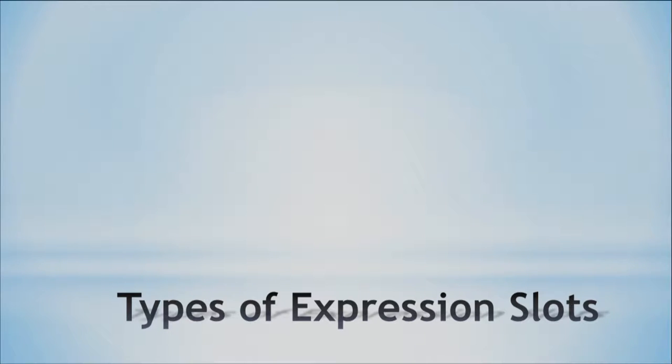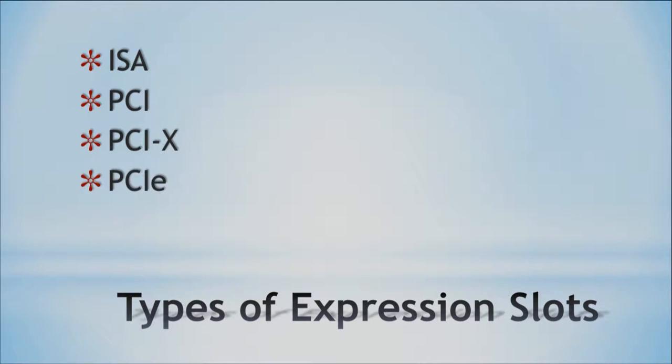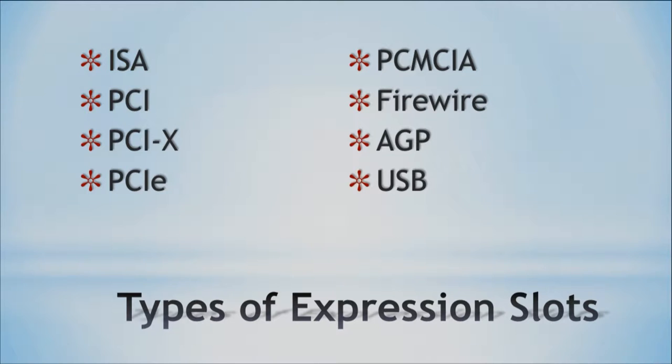So what types of expansion slots do we have? Well, it's a pretty big list. Some of them you'll probably be familiar with, some you won't. An older one is ISA. You have PCI, PCI-X, PCI-E, PCMCIA — which is a little bit of a tongue twister if you try to say it quickly — and you also have FireWire, AGP, and even USB. You've probably heard of AGP, USB, maybe FireWire, and probably the three PCIs, but you probably don't know too much about them. That's where we get into this show and tell so you can see what they look like and how they work.